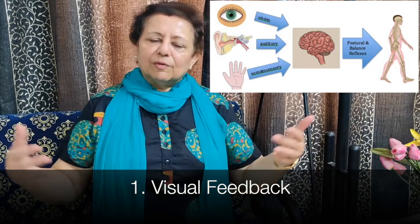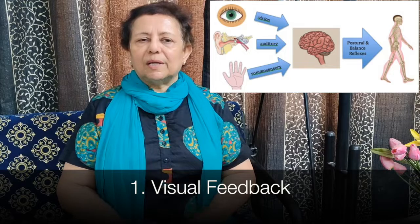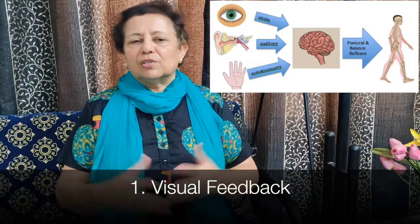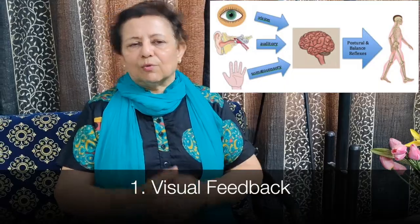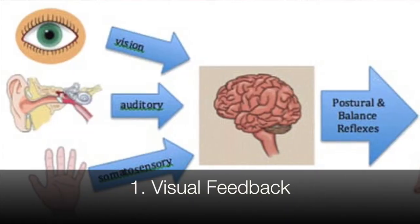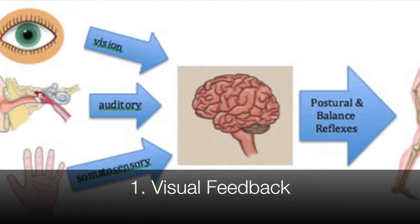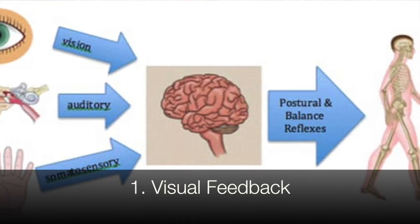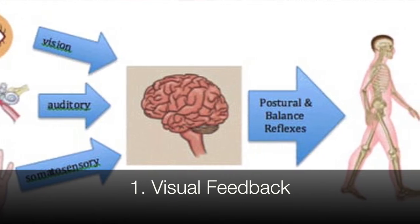Conversely, if the wheels are sound and sturdy but the steering wheel is rigid or not functioning properly, the vehicle will still not move. So our eyes act like a steering wheel. Visual acuity is very important for maintaining sound postural control, because visual information definitely aids in postural stability.